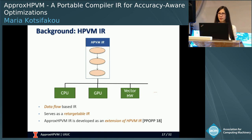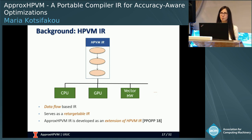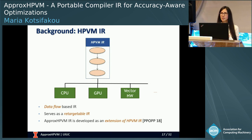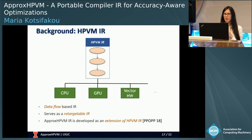For this key idea to work, we need an IR that must be portable. We based the IR design on the existing HPVM IR. HPVM is a data flow-based IR that serves as a retargetable IR because it supports compilation down to different hardware targets. Because of this property, the ApproxHPVM IR has been developed as an extension of the HPVM IR.